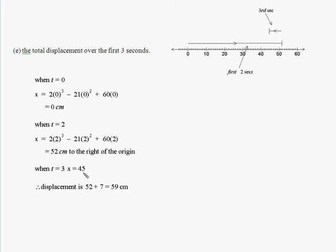So after three seconds it's back at 45 centimeters. But we can't just say the displacement was 45, because we want the total displacement. How far did it move? It went 52 centimeters, then moved back seven centimeters. So the particle traveled 59 centimeters in total.